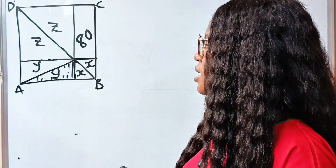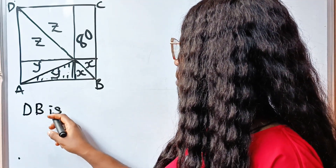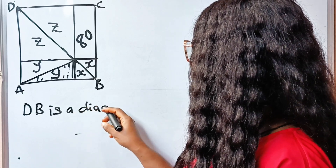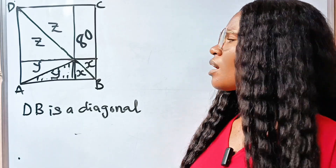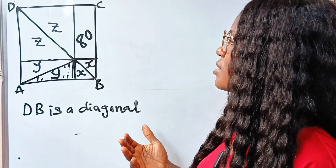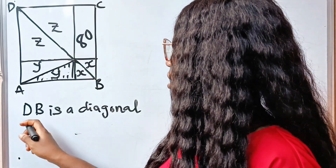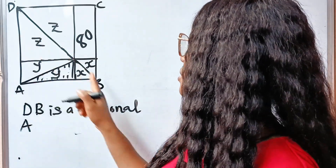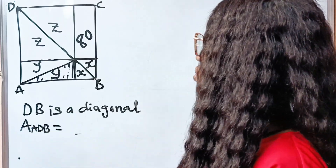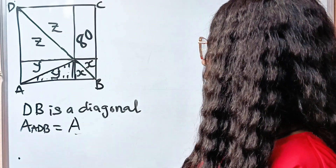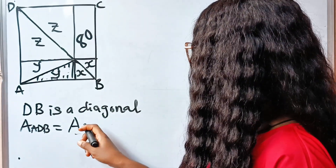Remember that DB is a diagonal as well. So what does that tell us? It simply means that the area of the whole triangle — triangle ADB — will be equal to the area of triangle DBC, using our theorem.